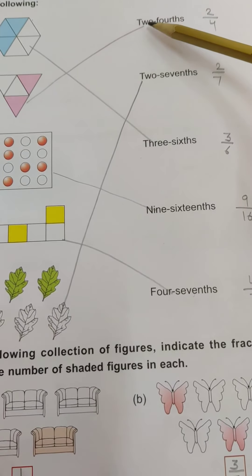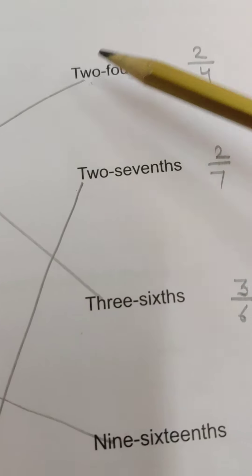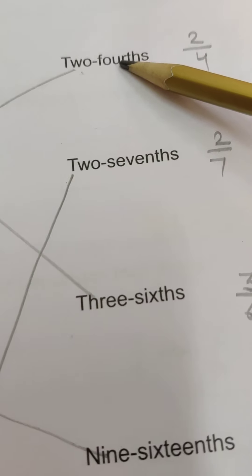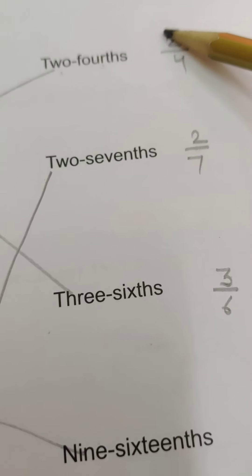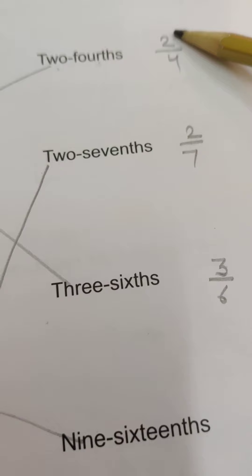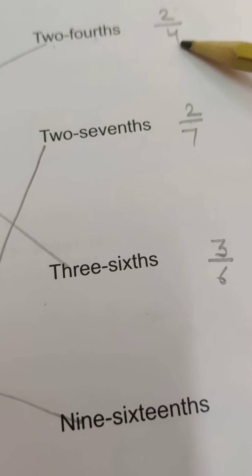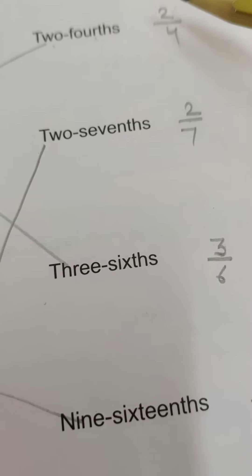See, two fourth. Two fourth means what is in the numerator? Two. And in the denominator, fourth means four. When we pronounce this fractional number, the numerator is the simple number. But when we call the denominator, we don't call it 4. We call it 4th as an ordinal number.